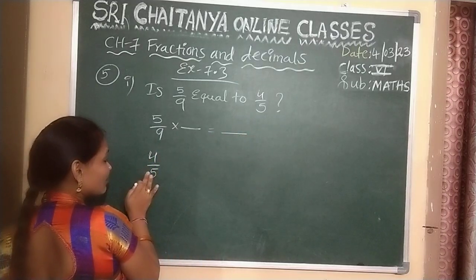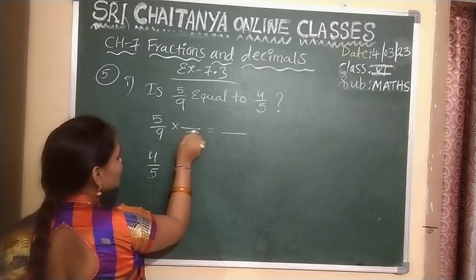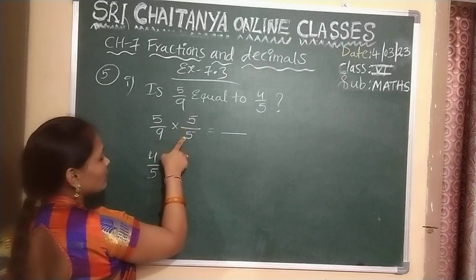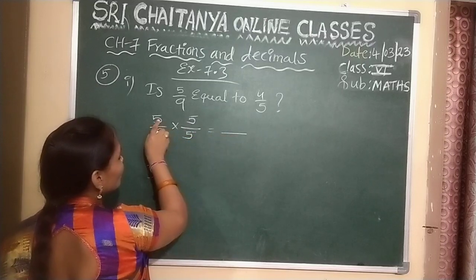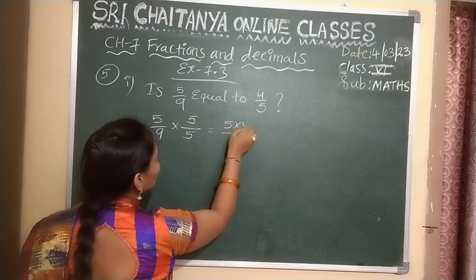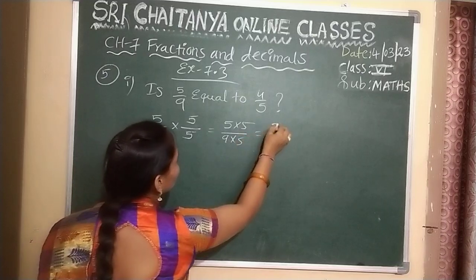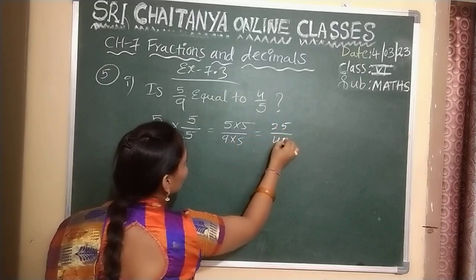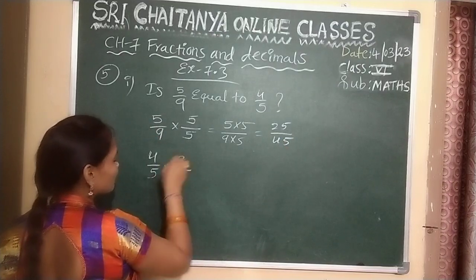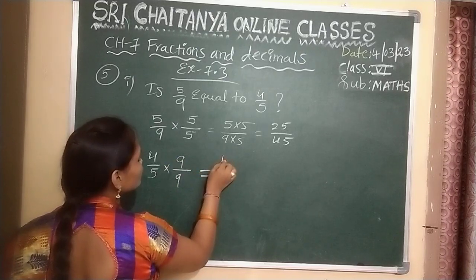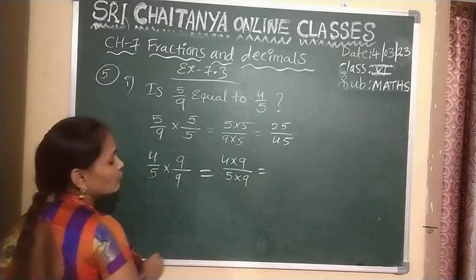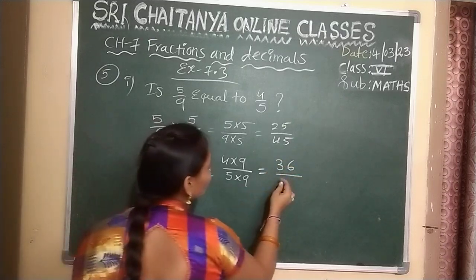Just simply, I am taking the second fraction's denominator and multiplying with the first fraction. 5 is the denominator, so I am multiplying and dividing with 5. Product of numerators by product of denominators: 5 into 5 over 9 into 5. 5 fives are 25, 9 fives are 45. Now here, this denominator is 9. We multiply and divide with 9: product of numerators — 4 into 9 over 5 into 9. 4 nines are 36, 5 nines are 45.